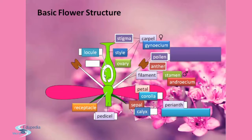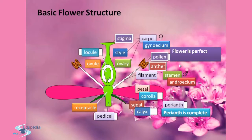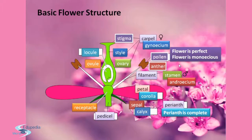This is the locule present in the ovary, and this is the ovule. The hollow part is the locule. So this flower is perfect and monoecious — monoecious means it bears both female as well as male parts, and therefore that flower is considered perfect and monoecious too.